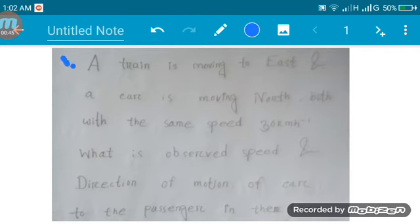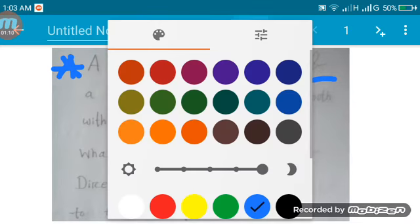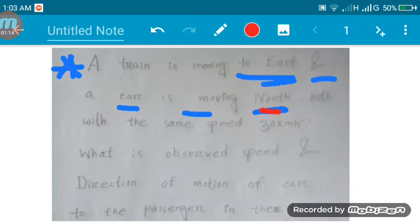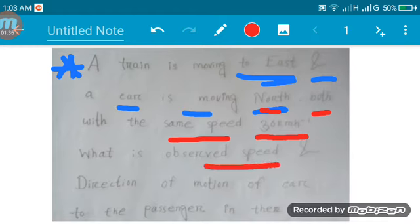Now the question: A train is moving to the East, and a car is moving North with the same speed, which is 30 km per hour. What is the observed speed?